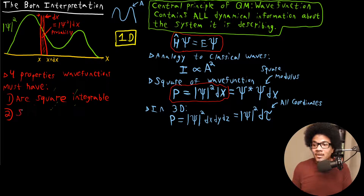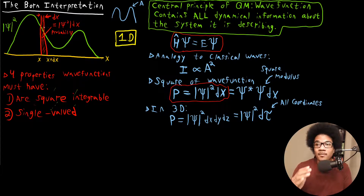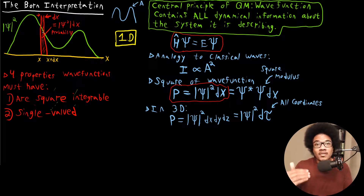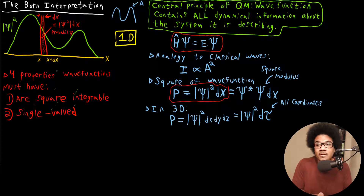The second property is that the function must be single valued. The reason is that you can't have two probabilities for the same region of space. If I specify a region of space and say it has a 40% probability of being located there, it can't also have a 50% probability of being in that same region — that's not how probabilities work. Think of heads or tails: a coin can't have both a 50% and a 20% chance of being tails. These functions have to be single-valued functions.